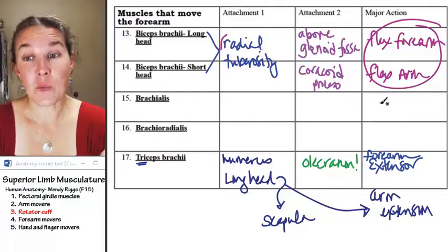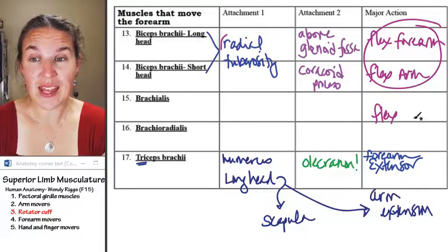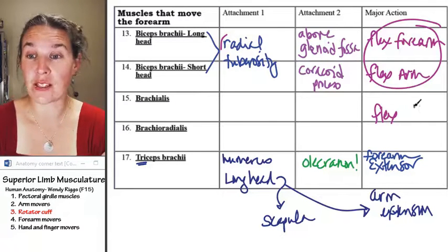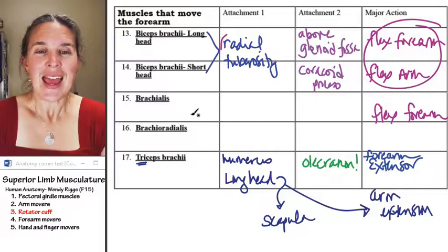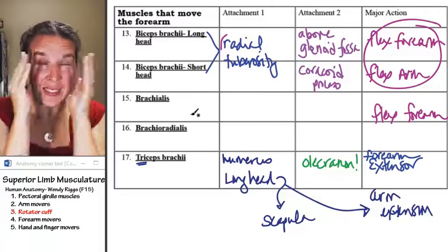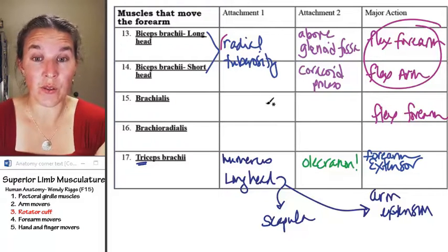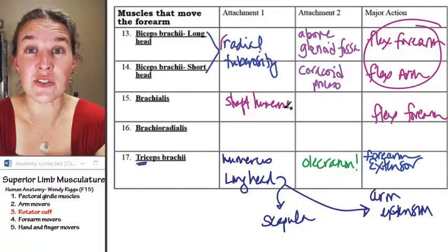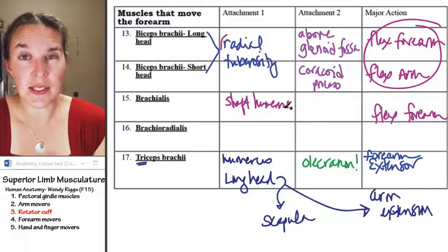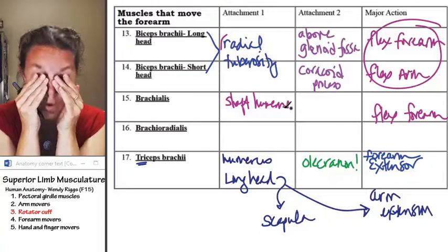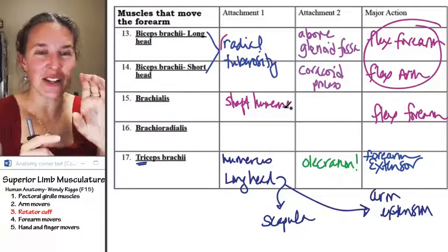Brachialis. Brachialis is a flexor. It does not cross two joints. It only crosses the elbow joint, so it flexes the forearm. And let's see if I can remember where brachialis attaches. It smashes onto the humerus. So it attaches to the shaft of the humerus on the anterior surface and deep to biceps. And then my other attachment is going to have to be, I know it has, oh, I got it. See, this is why you had to learn these things.